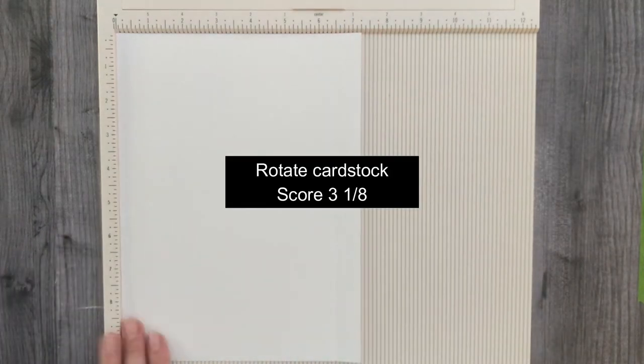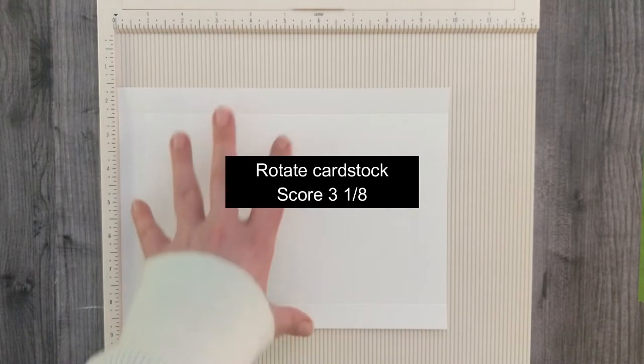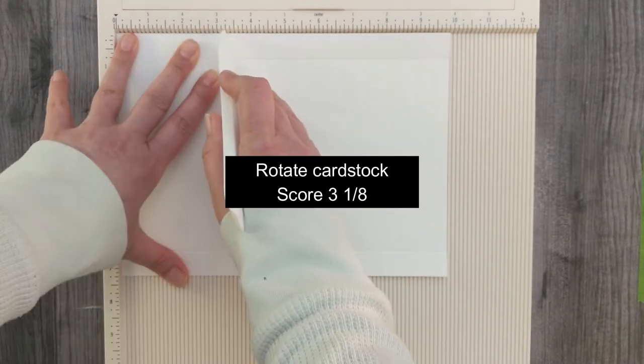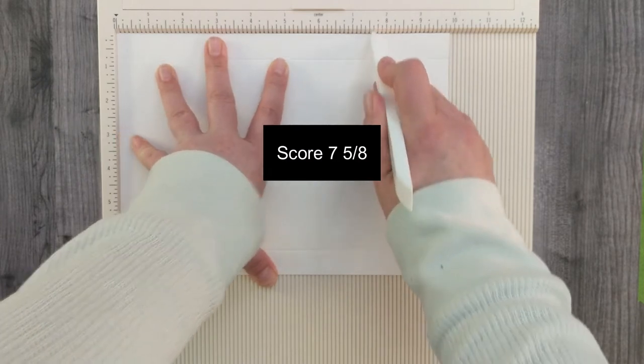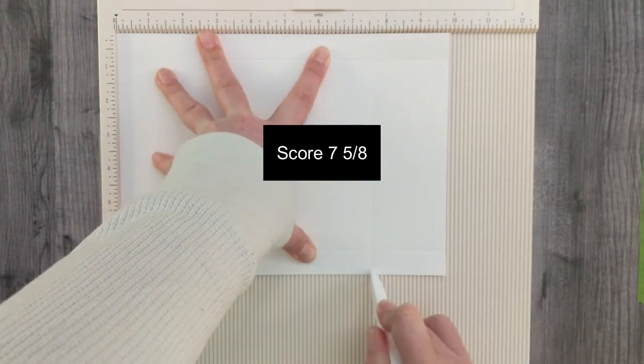Rotate the cardstock and score at 3 1/8, and score at 7 5/8.